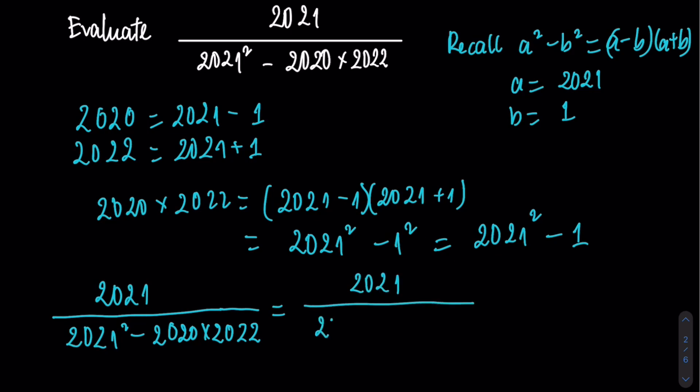So I have 2021 over 2021 squared minus (2021 squared minus 1). When I open the bracket, I will have 2021 over 2021 squared minus 2021 squared plus 1.